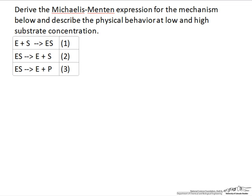In this screencast we're going to derive the Michaelis-Menten expression for the mechanism shown below, which is the classical Michaelis-Menten formalism. We'll try to describe what the real physical behavior is that leads to the observed kinetic dependencies. There are three steps to the Michaelis-Menten mechanism. The enzyme plus substrate react to form the enzyme-substrate complex — the necessary first attachment of the substrate to produce a bound substrate on the enzyme, or ES.